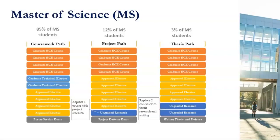If you look at the project path, you'll see that it's fairly similar in the requirements, but one course requirement has been replaced by a big project. This is basically a big semester or possibly even longer project that you do one-on-one with a faculty member. It can be a research or development project and is capped off with a project defense. Very few students take the thesis path, which replaces two courses with a thesis.